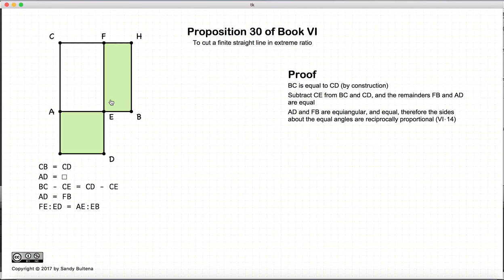Now we have two equal angular parallelograms that are equal in area, and in that case according to Proposition 14, the sides about the parallelograms are reciprocally proportional, which means that FE to ED is equal to AD to AB. This is just the sides being reciprocally proportional, but FE is equal to AB because it is a square, so we're just going to replace FE with AB.